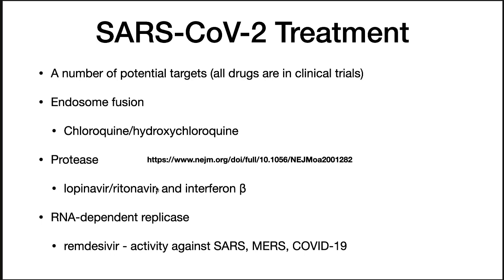RNA replicase inhibitors such as remdesivir, originally developed for treatment of Ebola, have found success in treating SARS-CoV-2. Clinical trials of this drug are also ongoing. Larger trials are now warranted, and hopefully soon we'll know if this drug is effective. This is just a few examples of the drugs being tried — a number of them show promise, and I expect in the coming months there will actually be a useful treatment for this disease.